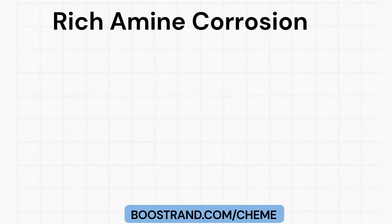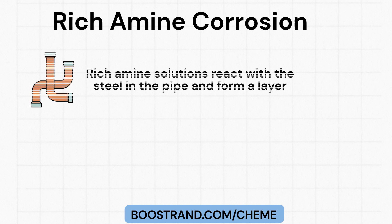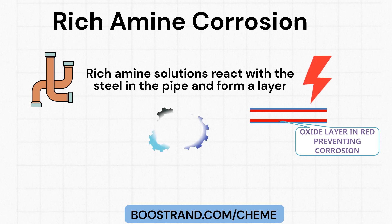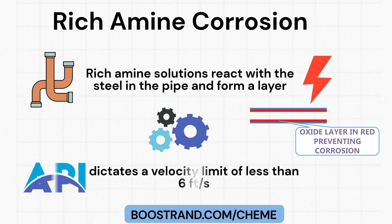Rich amine solutions are corrosive, particularly after absorbing acid gases. They tend to react with steel in the pipe and form a protective layer, which prevents further corrosion; however, this layer is subject to erosion at high velocities, leading to further corrosion. To manage this, API dictates a velocity limit of less than 6 feet per second for amine in pipes and equipment, reducing the risk of erosion and the resulting corrosion.